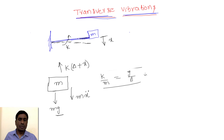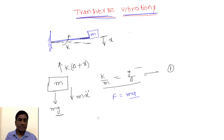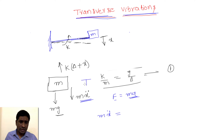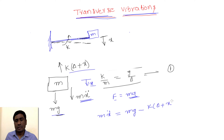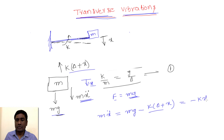From Newton's second law, F = m·a. Here m·ẍ is the dynamic force. We equate dynamic force to static forces. Forces acting downward are positive and upward are negative. So: m·g − k·(δ + x) = m·ẍ. Since we know m·g = k·δ, those terms cancel, leaving m·ẍ + k·x = 0.